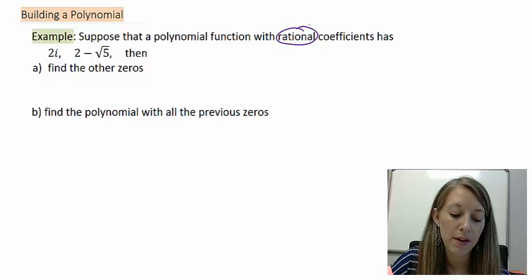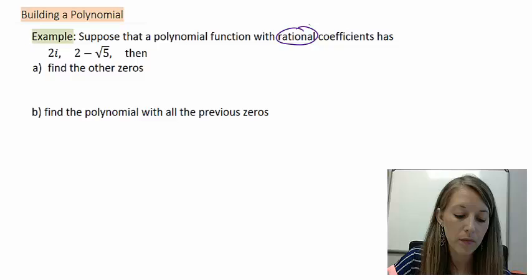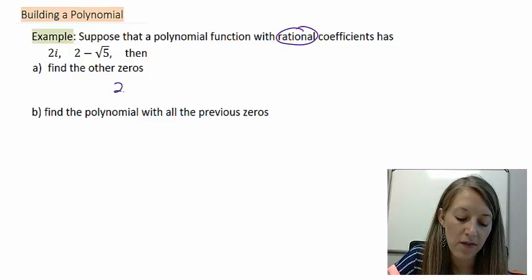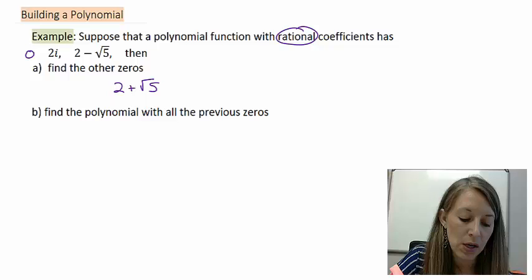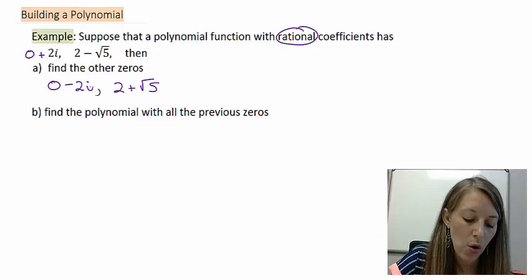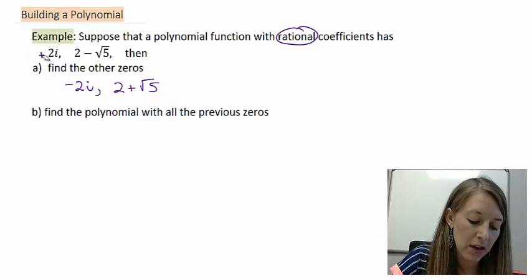We know that since both of these fit into imaginary or roots, we know that they both have a partner that comes with them. The easier one to see, 2 minus square root 5, its partner is 2 plus square root 5. This one here, you might think of it as 0 plus 2i. So its conjugate would be 0 minus 2i or just negative 2i.